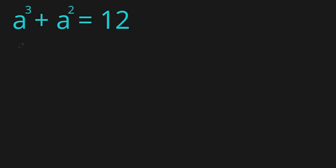Hello everyone and welcome. Let's solve this equation: a cubed plus a squared equals 12. So we have a cubed plus a squared minus 12 is equal to zero.